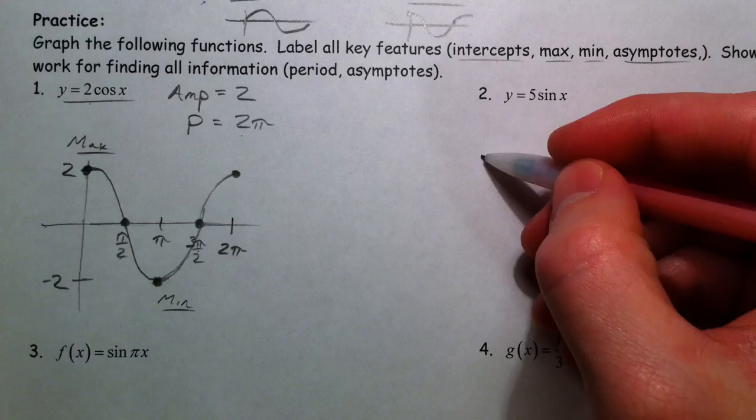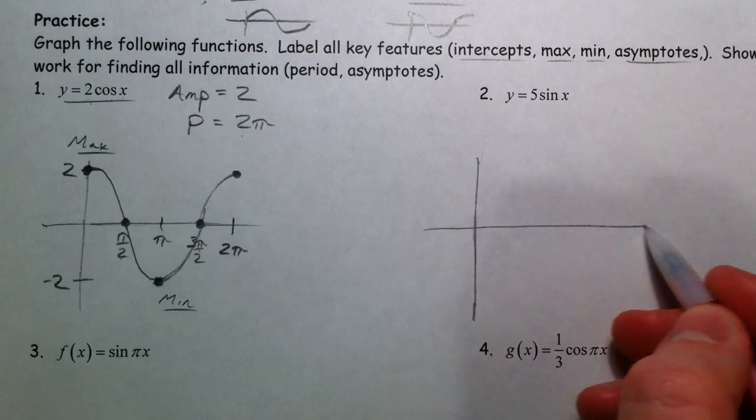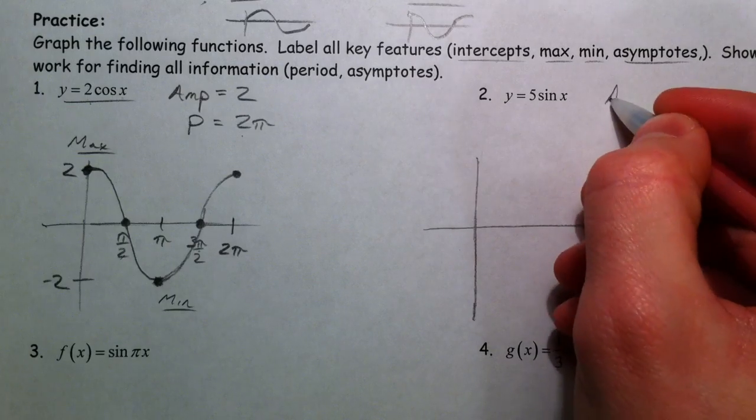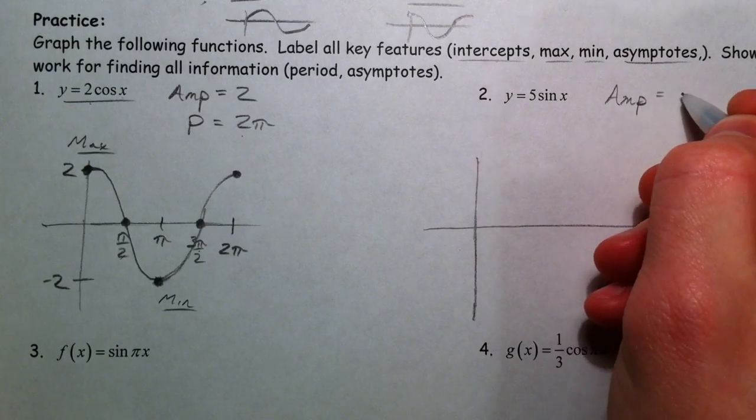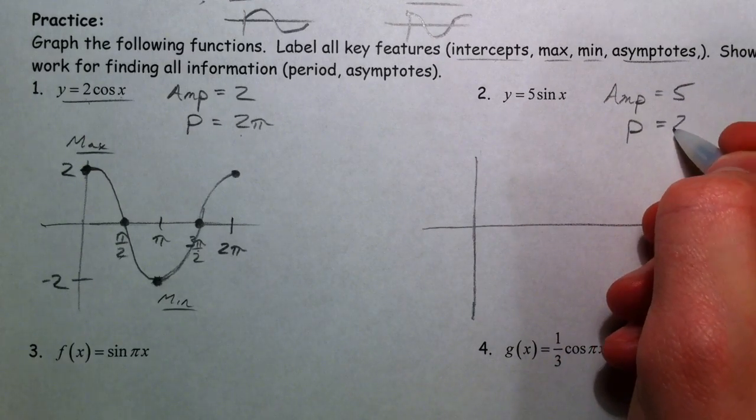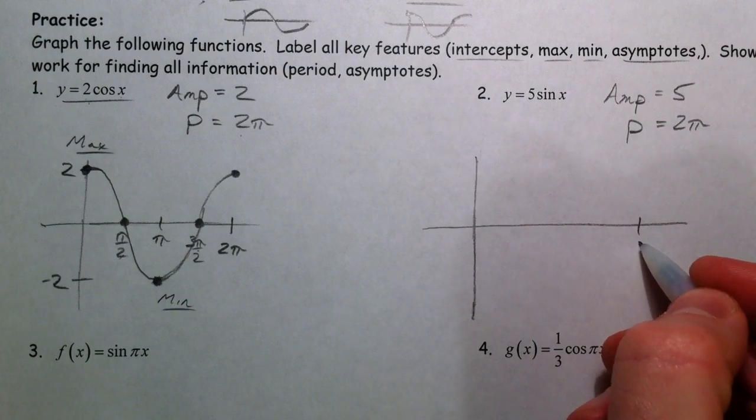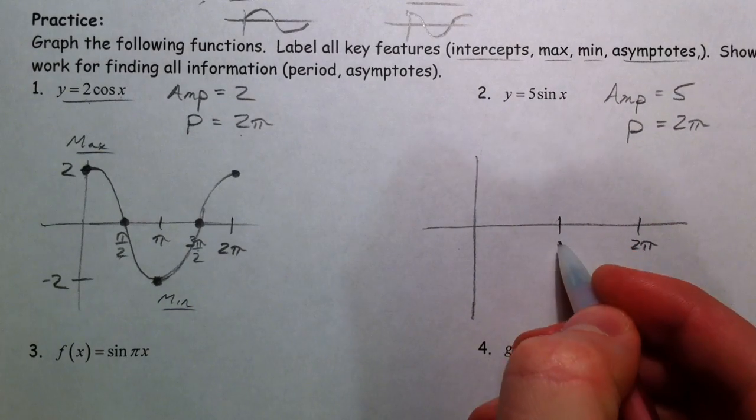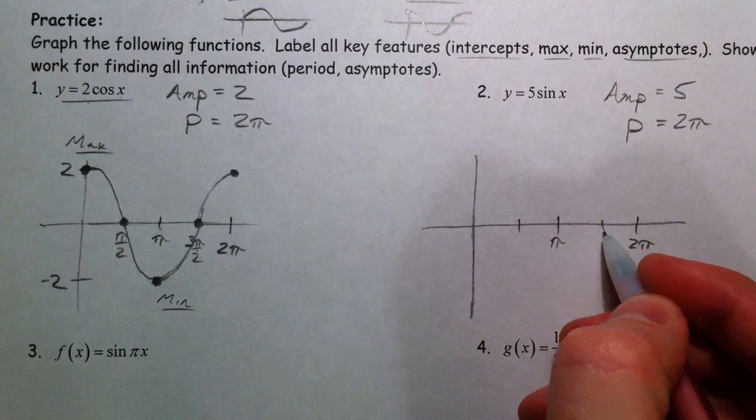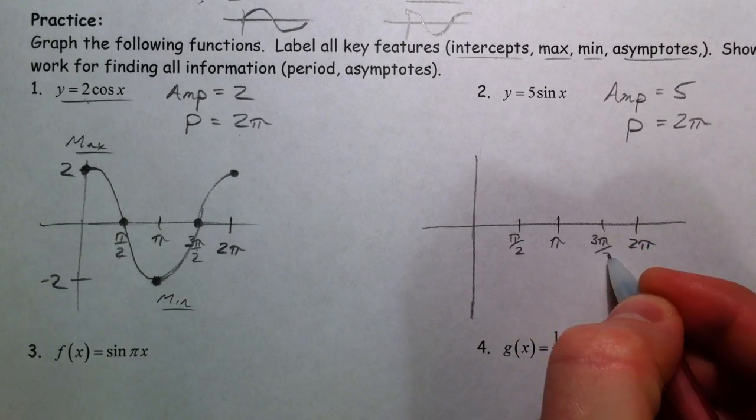In the same way, and you might want to try this next one on your own, just for practice, 5 is going to be what the amplitude is in this case. And the period, still unaffected. It's going to be 2π. So, 2π, cut that in half, half, and half. So π over 2, 3π over 2. And again, half of π is π over 2, and then I have 1, 2, 3 of those, so 3π over 2.